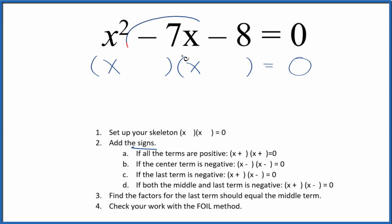In this case, we have a negative and a negative. If both the middle and the last term is negative, then we're gonna put a positive and negative in our skeleton equation, like this.